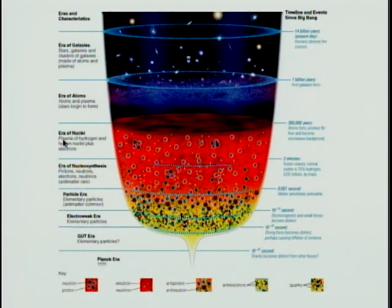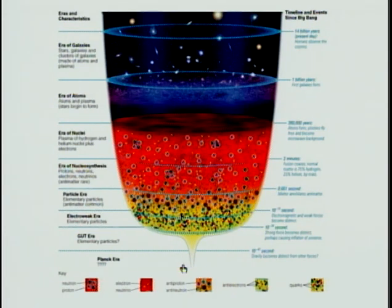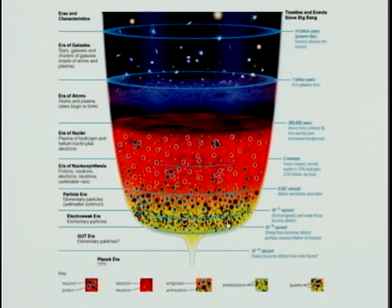It's the history of the evolution of the universe. It started very dense and very hot sometime 13.7 billion years ago. As time progresses, it expands and it cools down. If you look at this image a little bit more carefully, you see that there is a time where a lot of expansion happened.